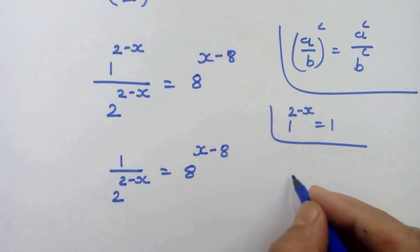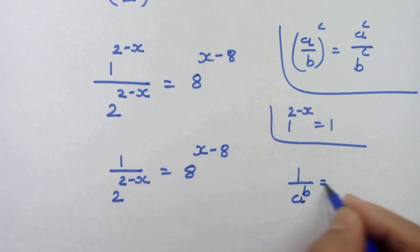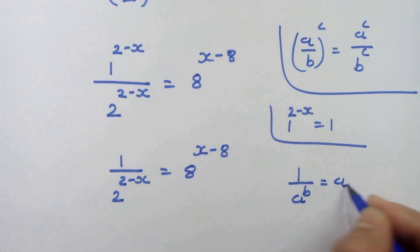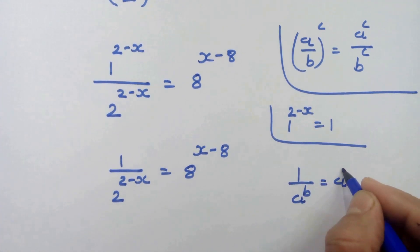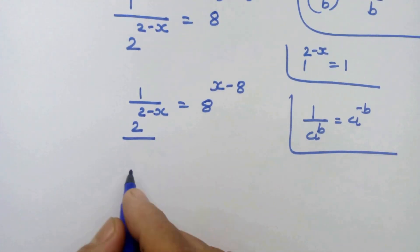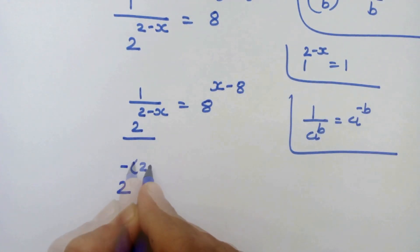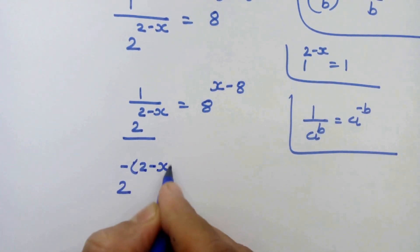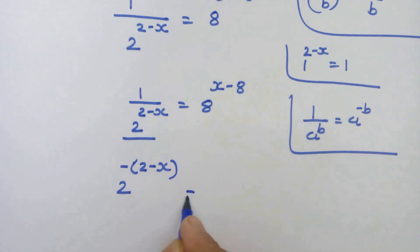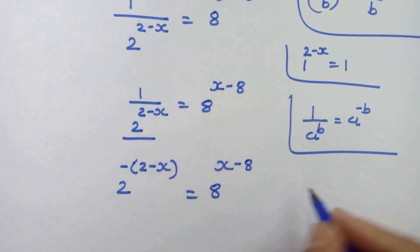If we have 1 upon a raised to b, then we can write it as a raised to minus b. By using this rule on this side, we can write 2 raised to minus 2 minus x is equal to 8 raised to x minus 8.